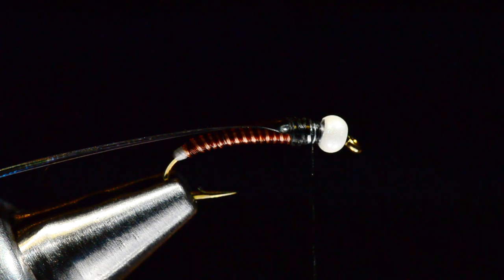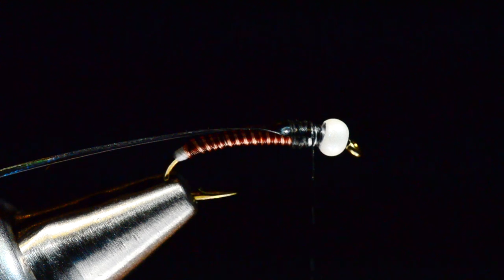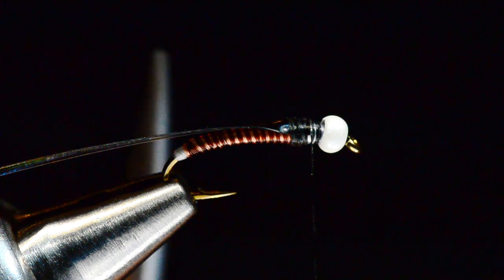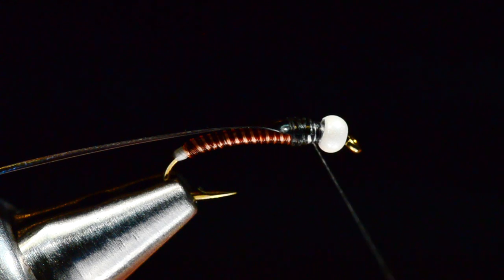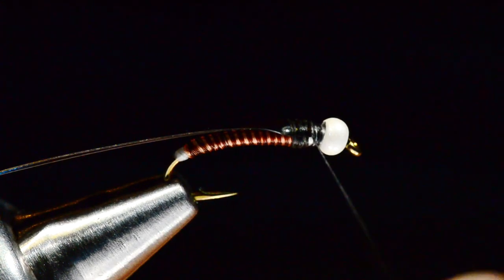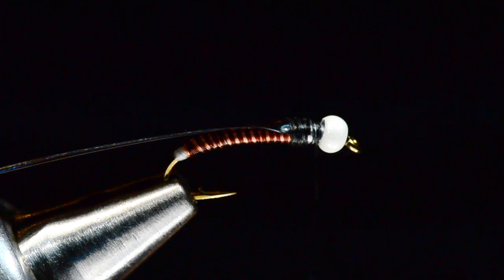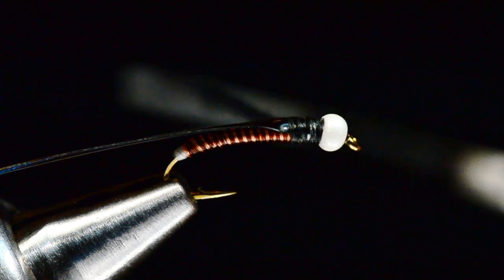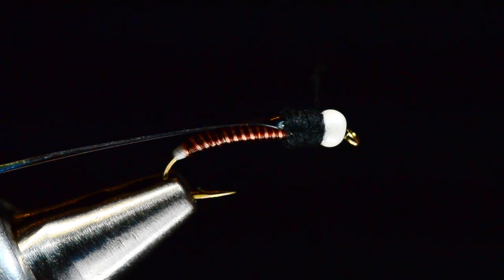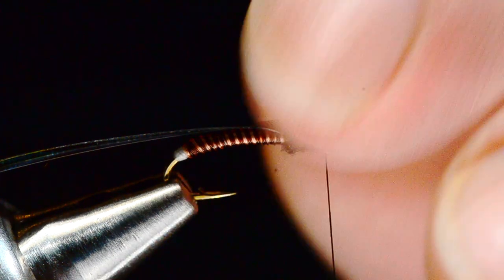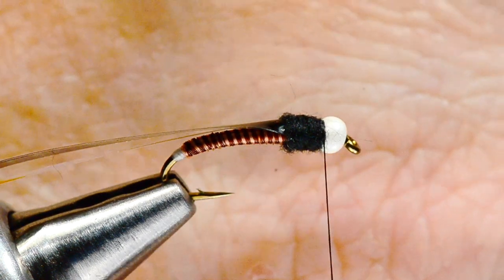Now I'm going to take some black superfine dubbing to build the thorax. And it's not going to take much. You can see we've got most of our bulk already built in here between the lead and the tie-down of all those materials. So we're just going to take a little bit of superfine. We're going to dub it on very tightly. And we're just going to smooth that thorax area out. So I'm going to go from the front edge of the bead back to the front edge of the wing case and forward again. And right now just behind the bead there.